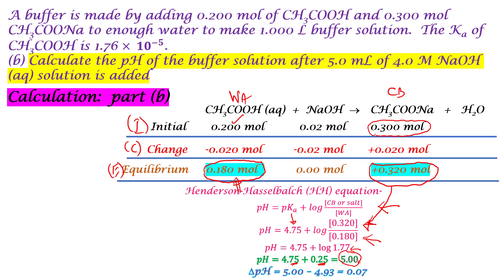So when you added 5 milliliters of 4 molar NaOH to your buffer, the pH changed from 4.93 — when the buffer was by itself — to 5.00 after the NaOH was added. That means the pH shifted by only 0.07 units. This is the conclusion from Part B.